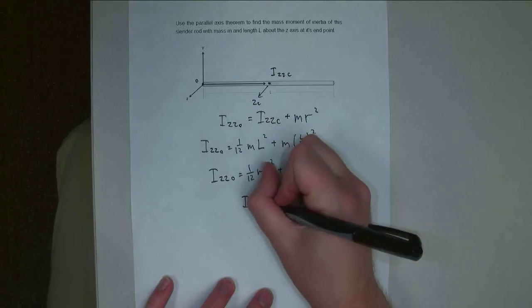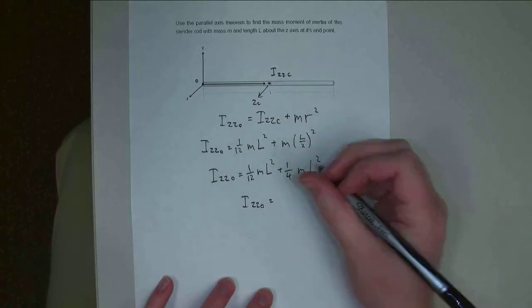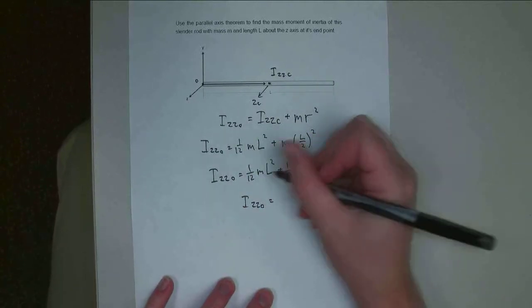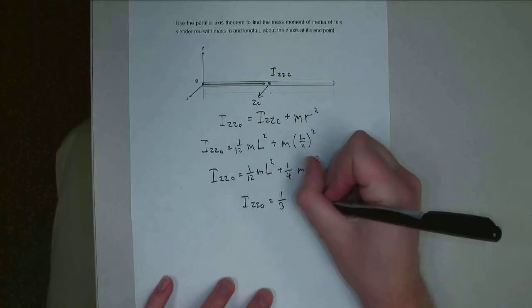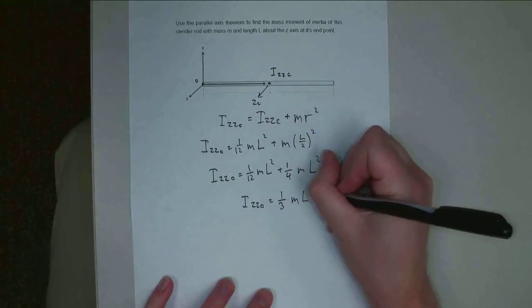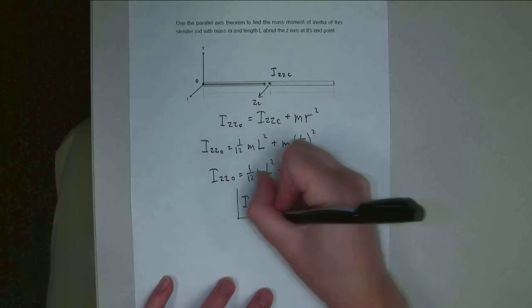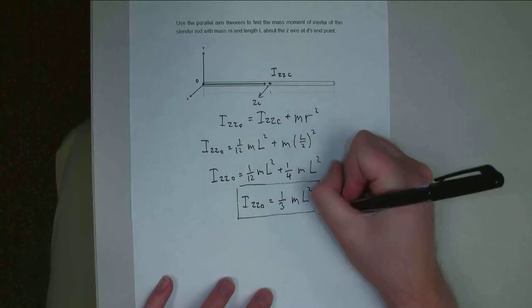And simplify that one step further. Izzo is going to be 1/12 plus 1/4 is going to give us 1/3 m l squared. And that's about as simple as we can get that formula there.